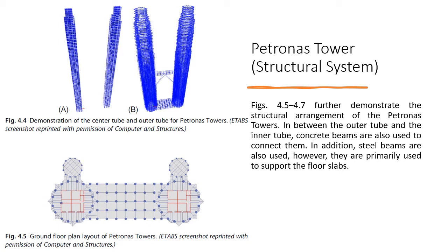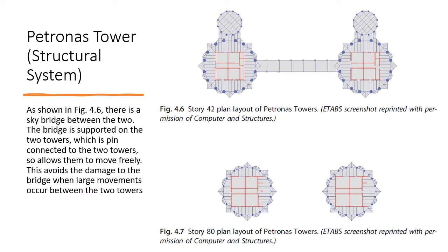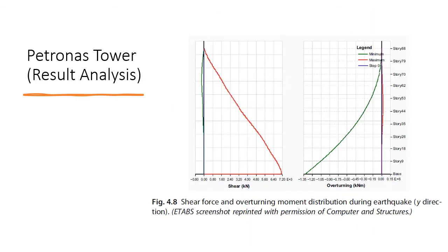Figure 4.5 shows the ground floor plan layout of Petronas, where the core is consistent up to the full height of the building. Figure 4.6 shows the sky bridge between the two towers, which is pin-connected to allow free movement, avoiding damage when large relative movements occur between the towers. Figures 4.6 and 4.7 also show the floor layouts at ground level and at story 80, confirming the core remains consistent from ground to the top.